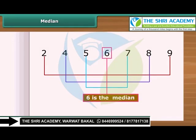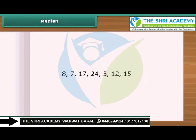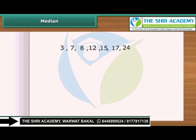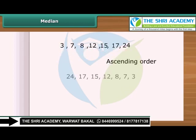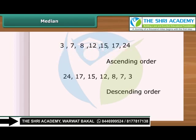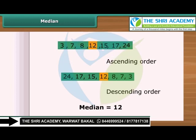Median is the value which lies in the middle of a group of numbers that have been arranged in order by size. Let us find the median of these numbers. Firstly, we need to put these numbers either in ascending or descending order. You can see the middle number is 12 — it has 3 numbers to its right and 3 numbers to its left. So the median is 12.